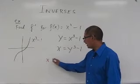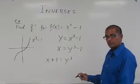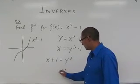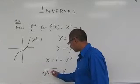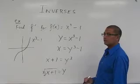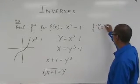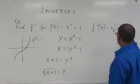Add one to both sides, x plus 1 equals y cubed. And then I cube root both sides to get to the y. So therefore y is equal to the cube root of x plus 1. So that is my inverse function. So my inverse function is f inverse of x is the cube root of x plus 1.